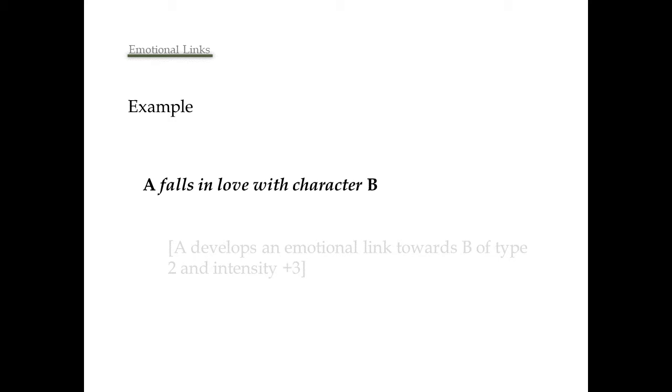Now, let's see an example of an emotional link as a postcondition. For the action character A falls in love with character B, the consequence is that A develops an emotional link towards B of type 2 and intensity plus 3.